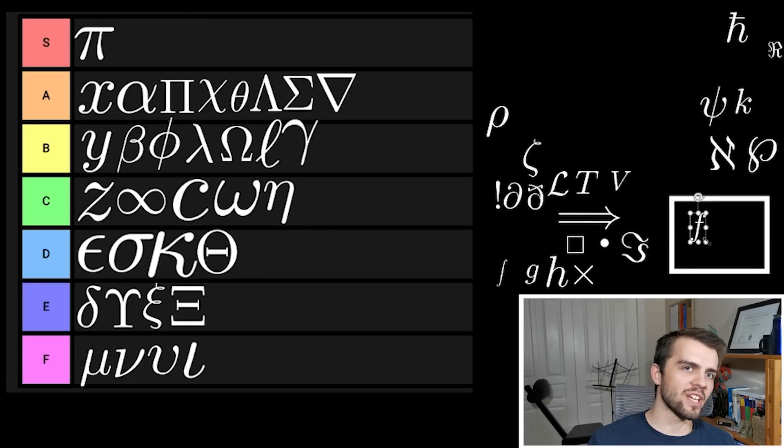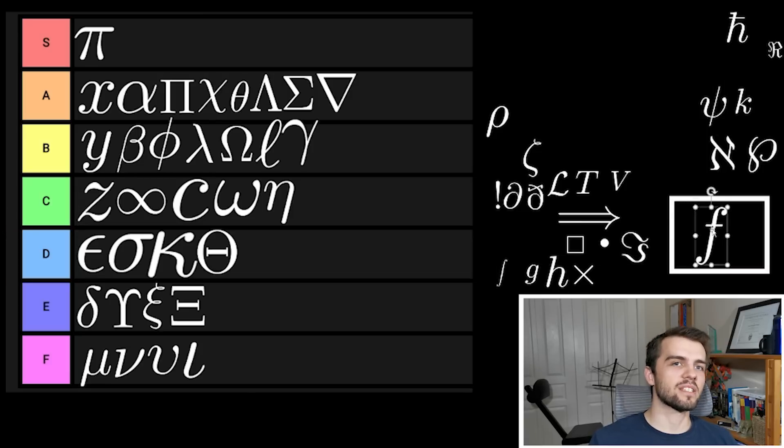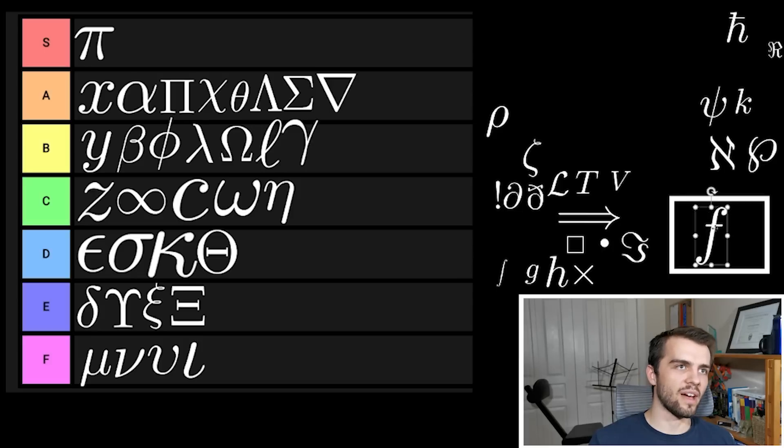Now we got F. F for functions. F is a classic and I really think that there's no doubt this is anything but A tier, just because of its simplicity. You have a function, you have the concept of a function, now everything is an F. F is good.